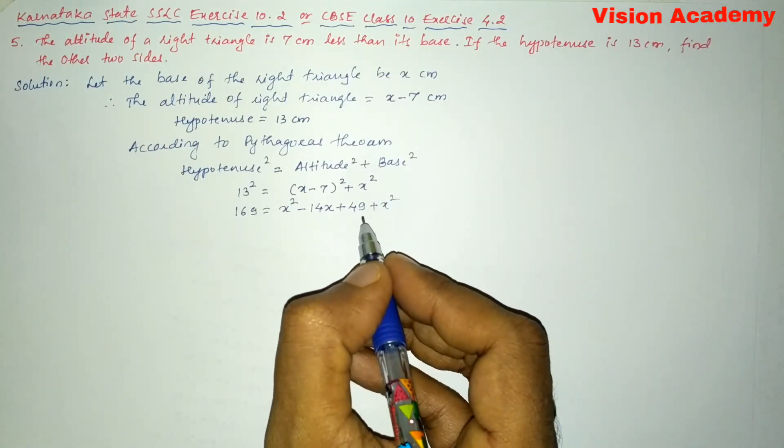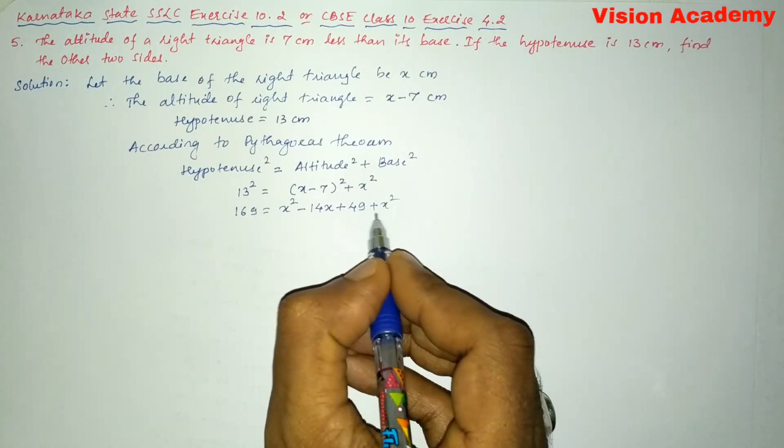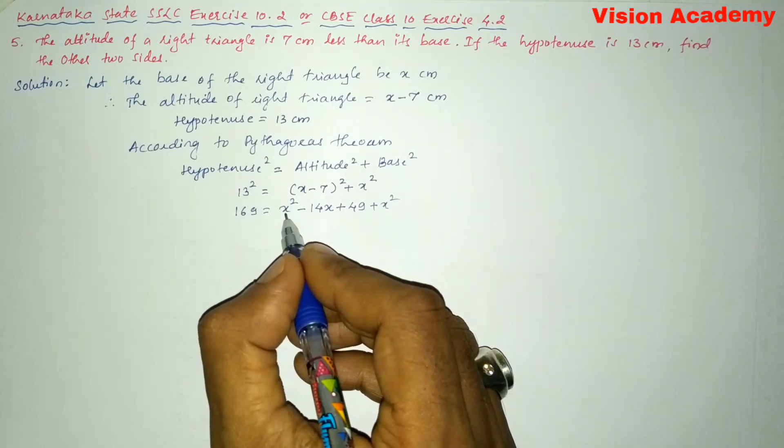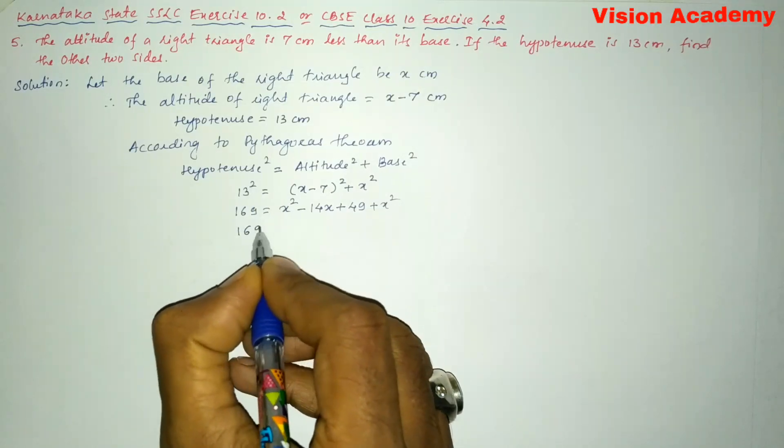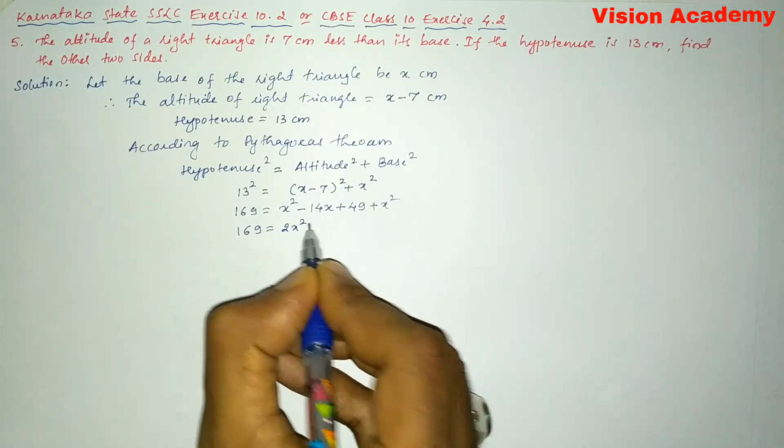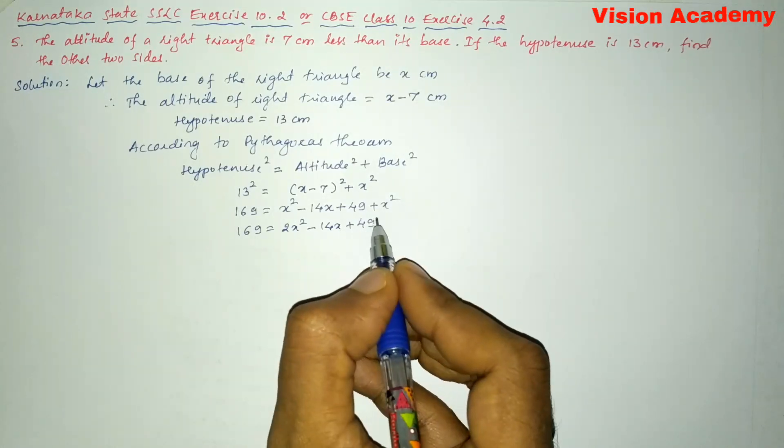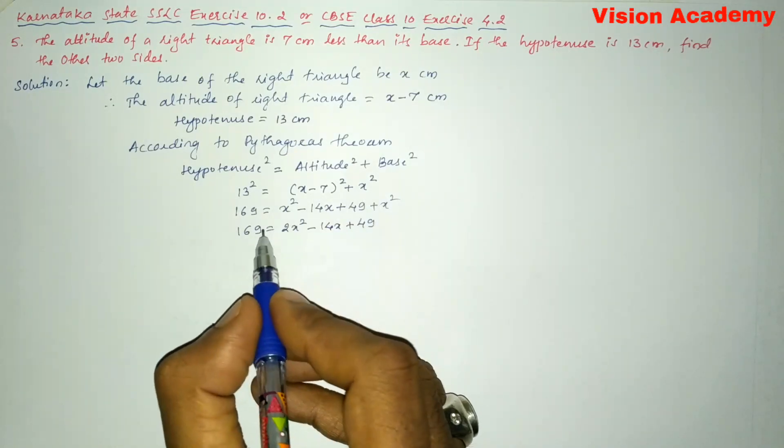Next we will further simplify this one. So x square plus another x square gives us 2x square. 169 is equal to 2x square minus 14x plus 49. Now let us transform this into standard form.